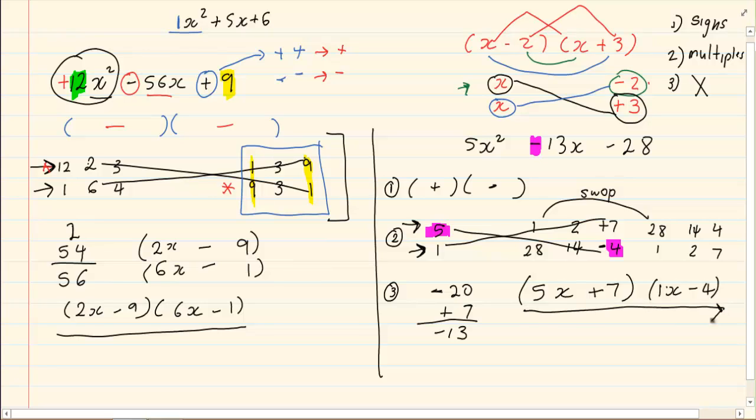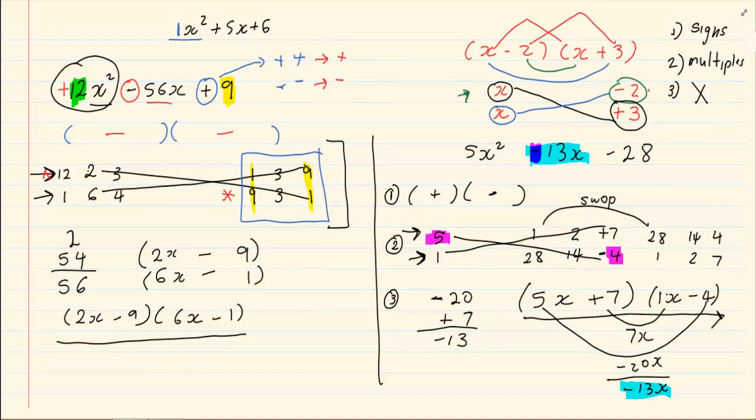If you are unsure about it, it is nice to check by just doing the smiles. 7 times 1 is 7x minus 4 plus 5 is minus 20x which equals to minus 13x giving us the middle number. Thank you for watching this video.